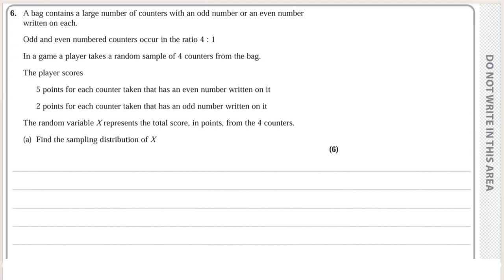We continue with the international A-level Statistics S2 paper from January 2024, question number six. A bag contains a large number of counters with an odd number or an even number written on each. Odd and even numbered counters occur in the ratio four to one.